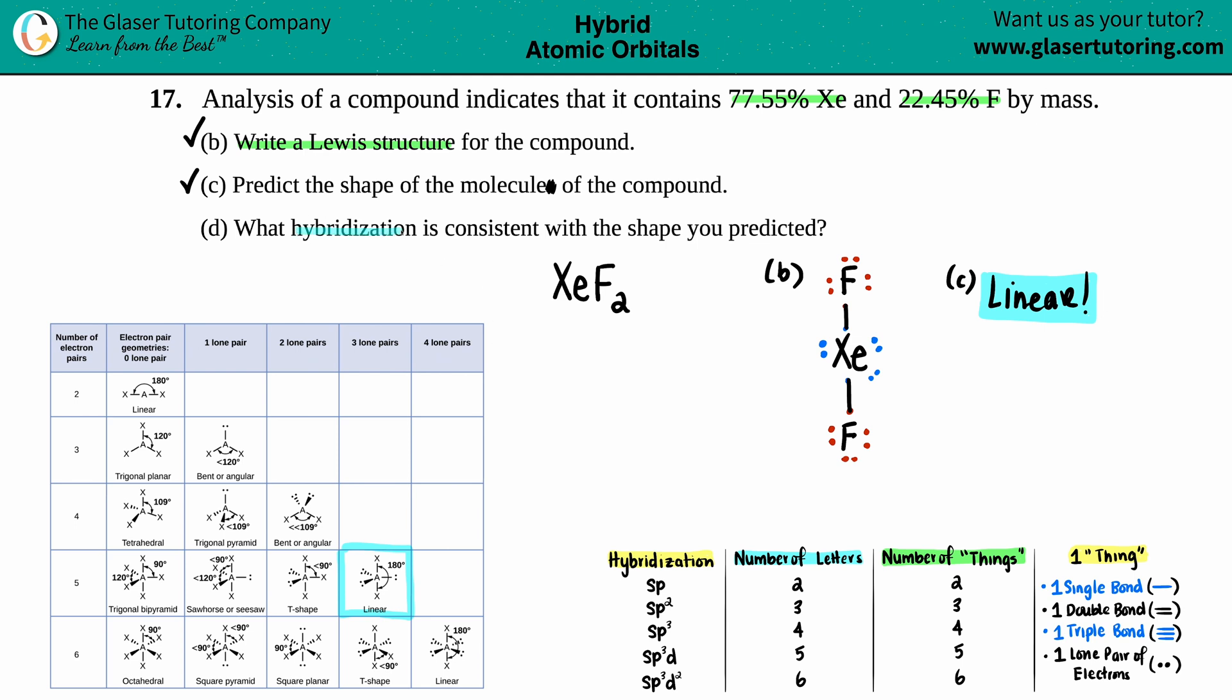Now for letter D, it says what hybridization is consistent with the shape you predicted? Hybridization is for all your elements, except for hydrogen, because hydrogen only has one electron. Since they didn't say specifically what hybridization we're looking for, I'm going to find out the hybridization for the two F's and the xenon. Now this is the information that we have to memorize for hybridization. These are grouped in the specific orbitals that are overlapping to form your bonds. And hybridization, SP, SP2, SP3, and so on, they correspond with how many letters there are. So literally like SP2, there's one S and two P's. P2 means you have two P's and you have a total of three letters.